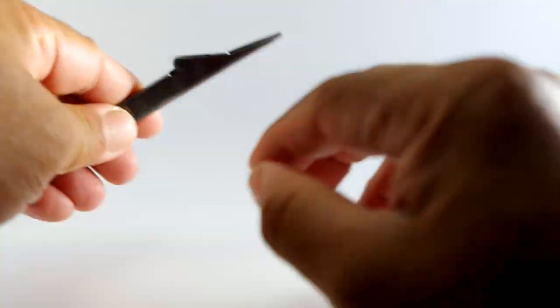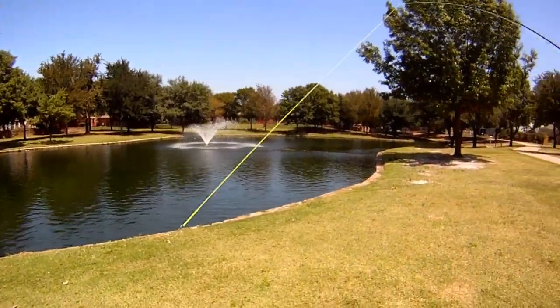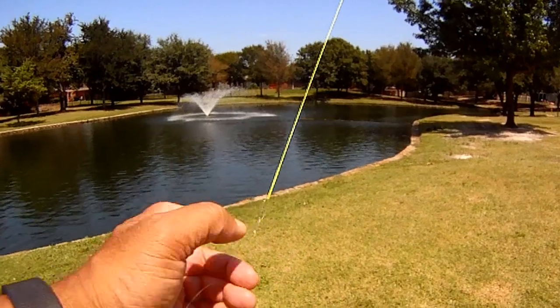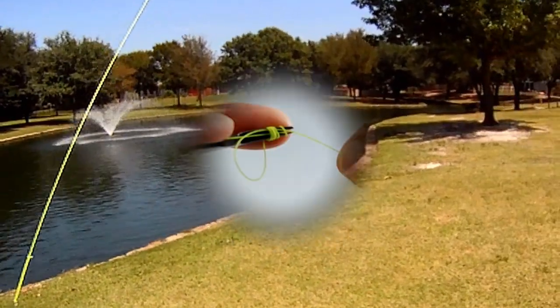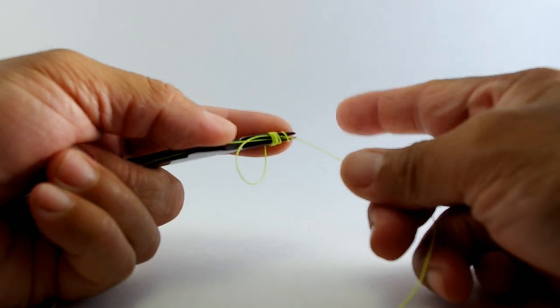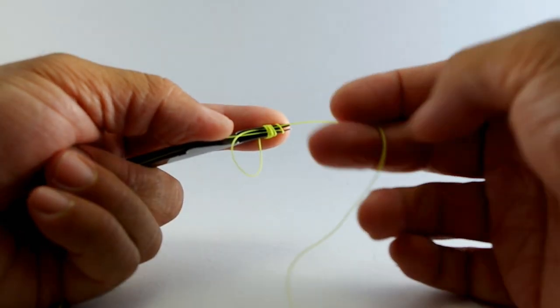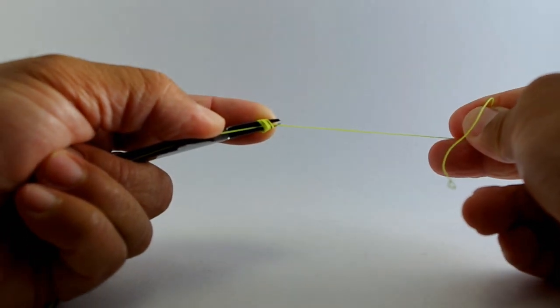And what we use it for is to tie a line strike indicator in lieu of using a traditional strike indicator. What we've done is we've wrapped the line about four or five times around the end of the tool, and then we run this line through those loops. And now we're just kind of cinching up on it.